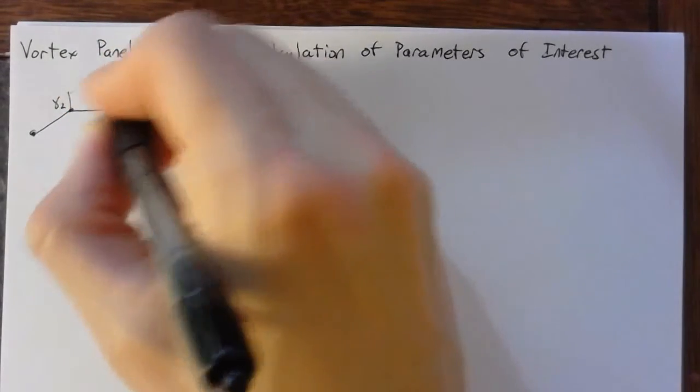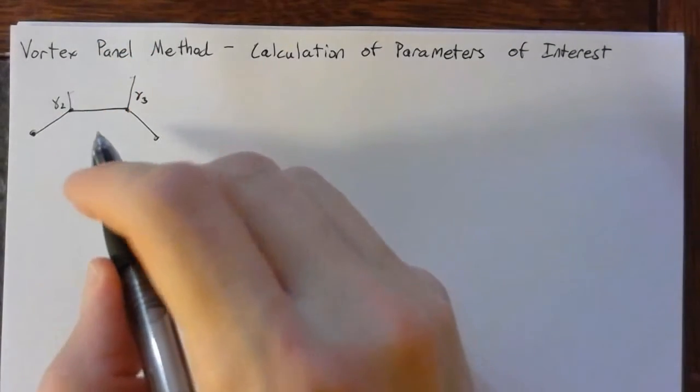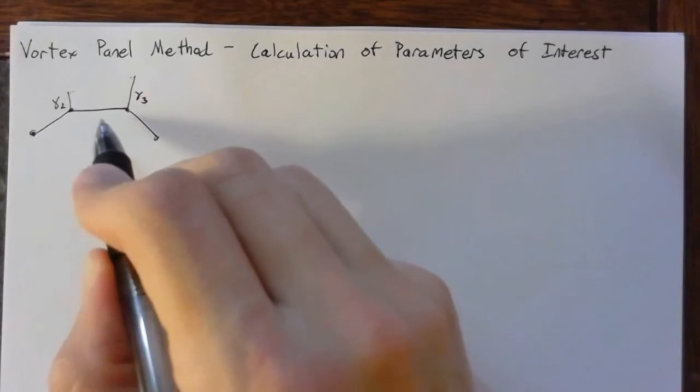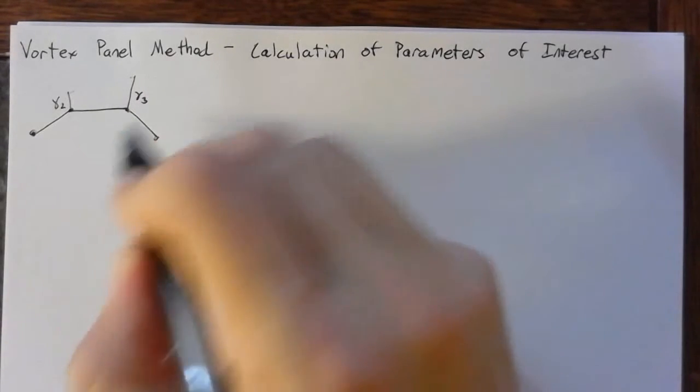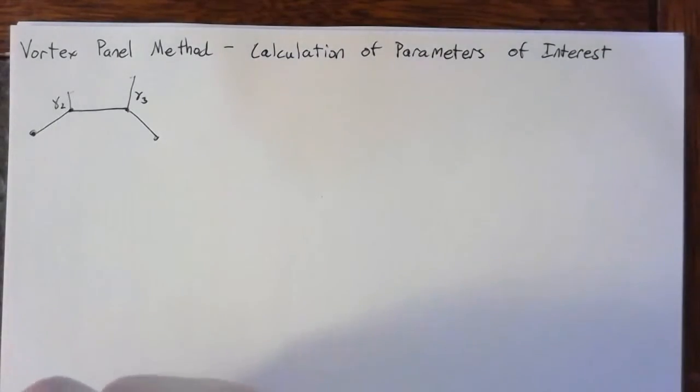Once we have all the vortex strengths, then we can actually start to look at the velocities at each of these points, and for instance, the stream function, and then also the lift and moment.